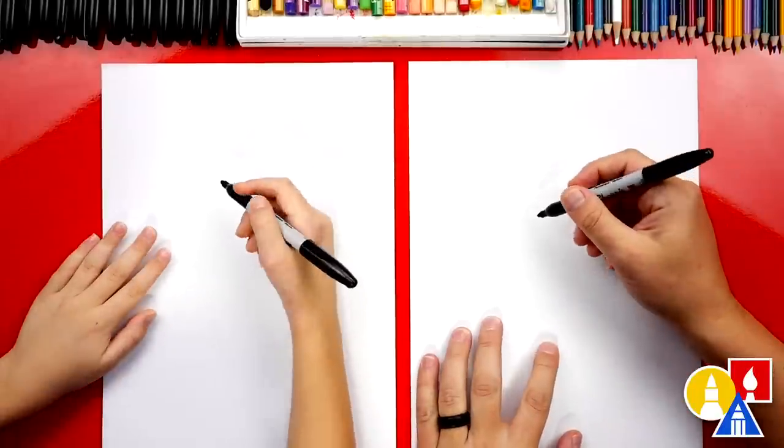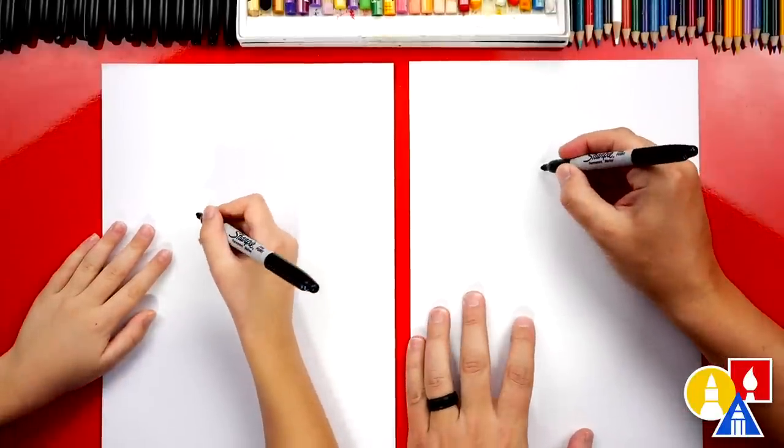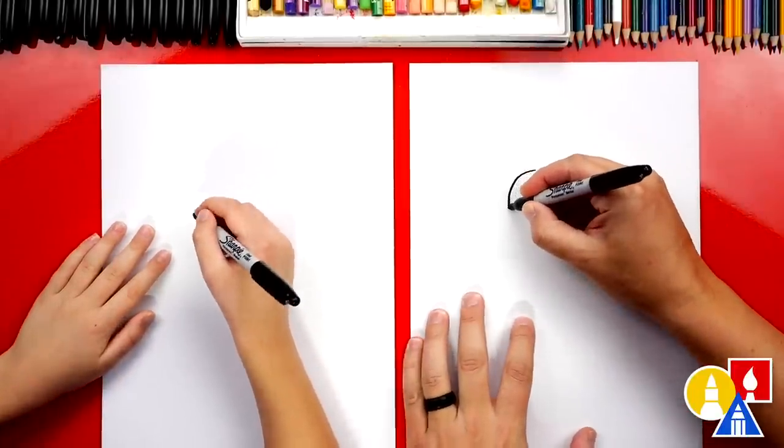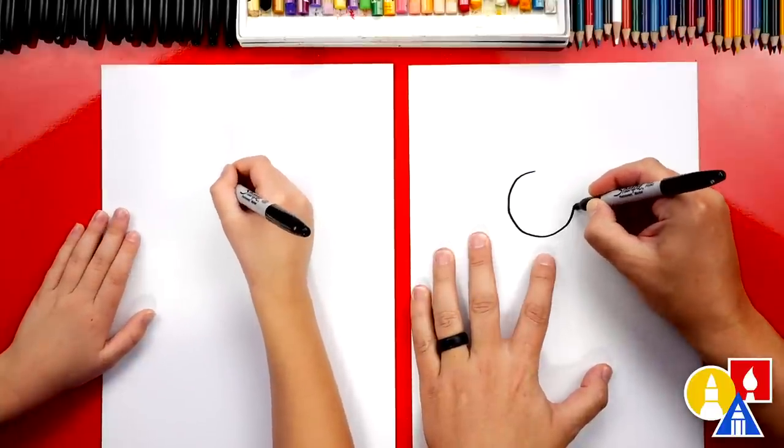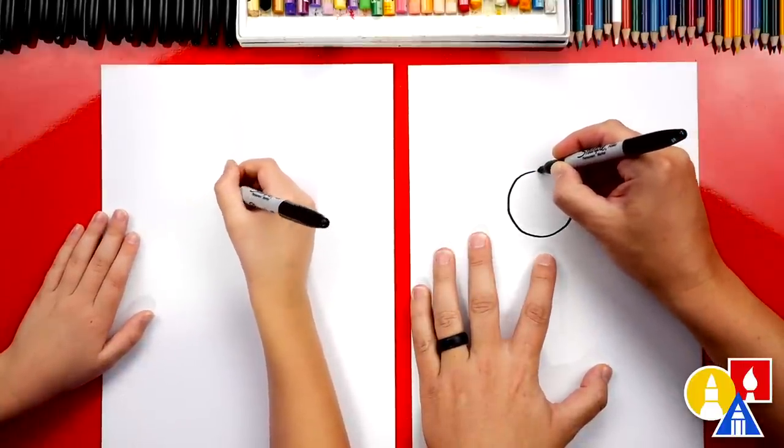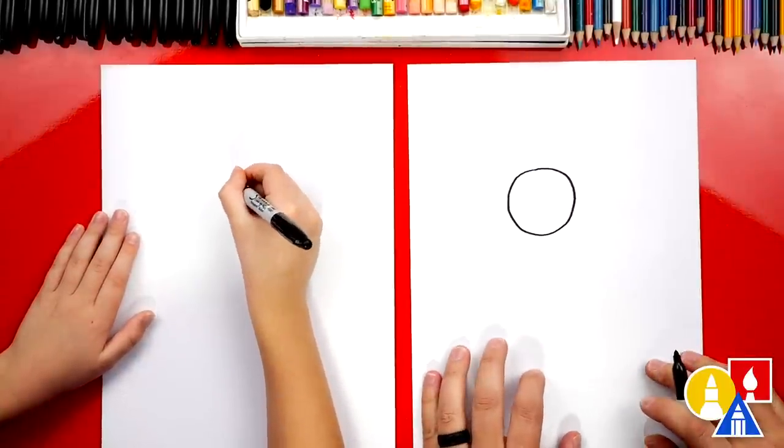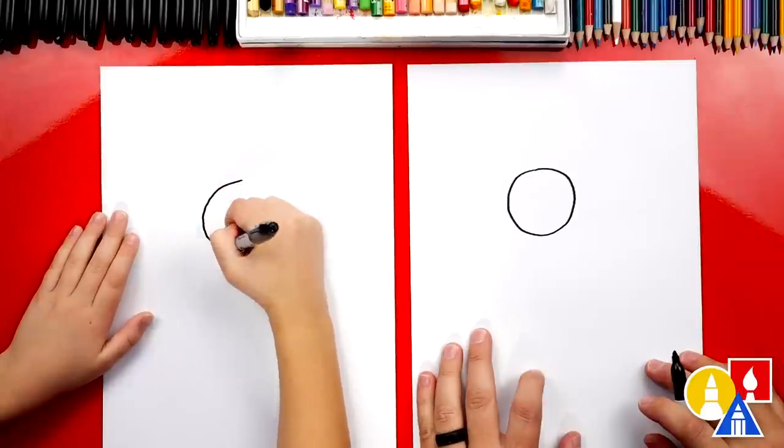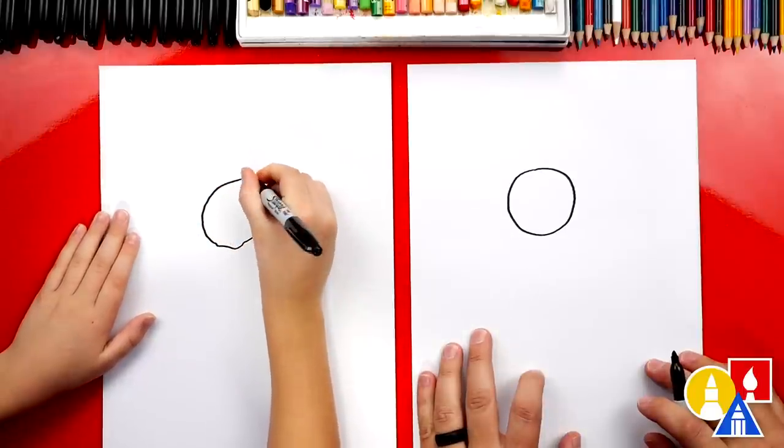Let's first draw a circle towards the top of our paper. We're going to draw it about this size. Come around and connect at the top. You did it!